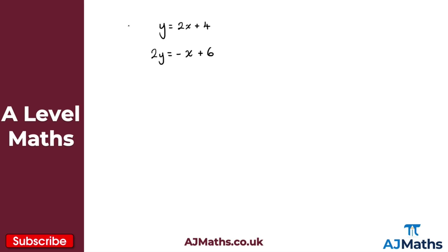What I've got here is a straight line, say l1, and another straight line, say l2. When I solve those, I'm looking for the point of intersection. Because they're just two straight lines, that point of intersection will be a single point.